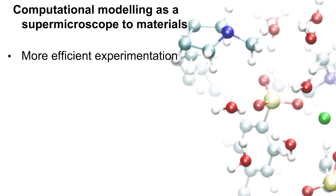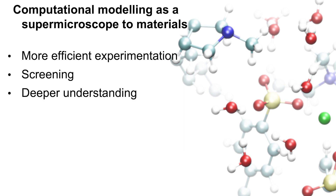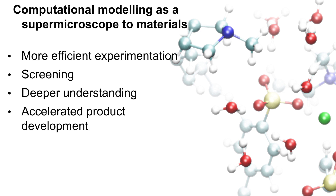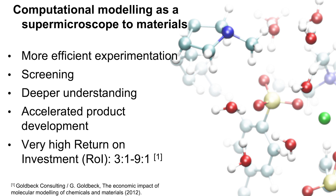Why modeling? Modeling is immensely more efficient than experimentation in terms of how many things can be probed — screening is hugely efficient and one can go through a vast variety of possibilities. The money cost of the materials is significantly less. It allows deeper understanding via having higher control over what goes in and detailed knowledge of what is coming out. Accelerated product development follows from that. And because the monetary costs are relatively low, the return on investment actually becomes very high, so profits can become very high.